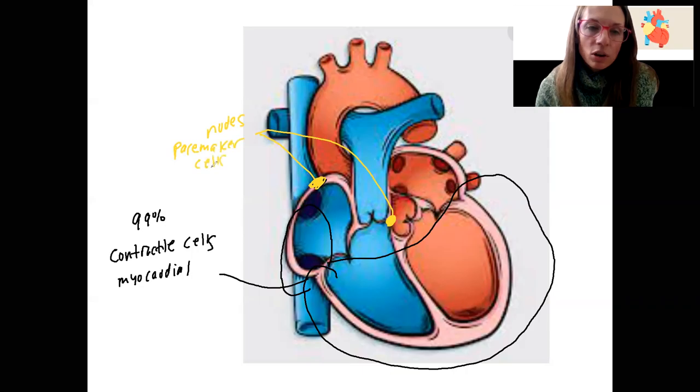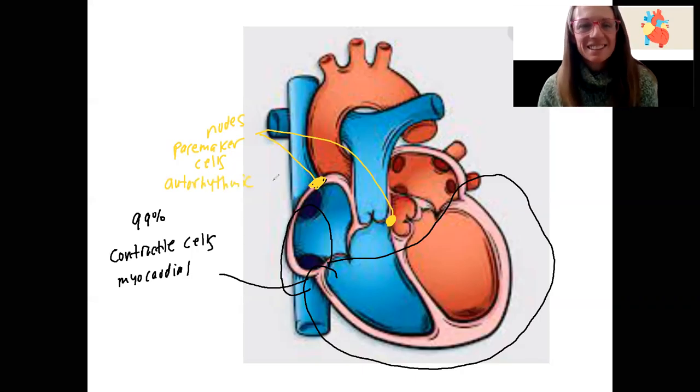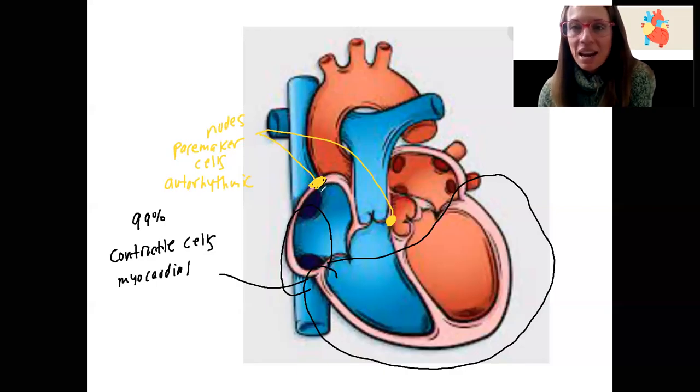These are also called autorhythmic. So this is about 1% of the cells, but they're really important. And these are what spontaneously contract without any nervous input. So that's how a heart can contract outside of a body until it runs out of oxygen. Pretty cool.